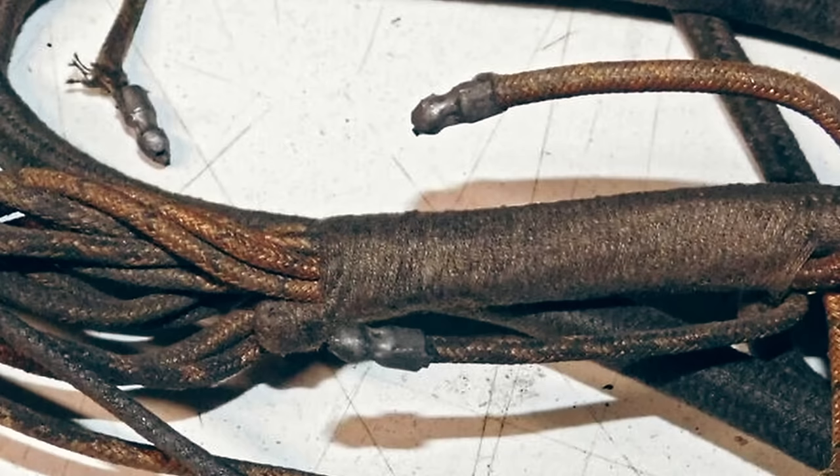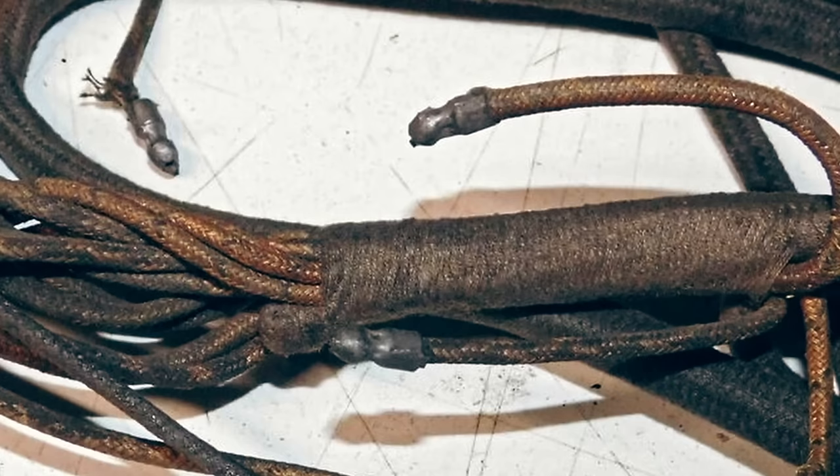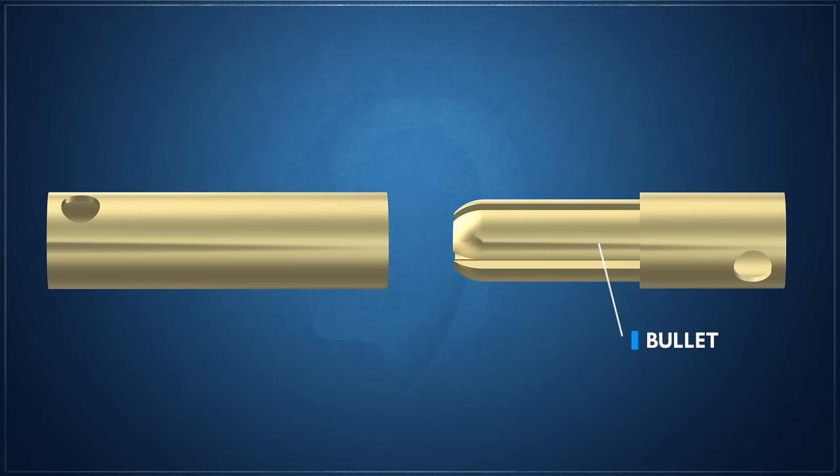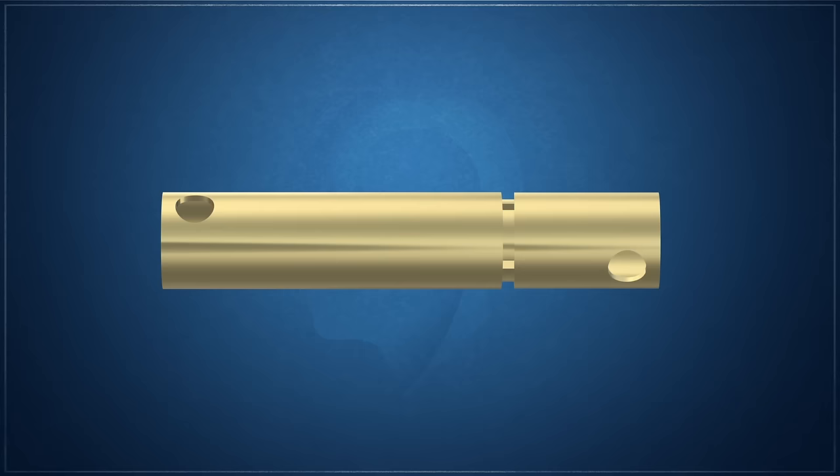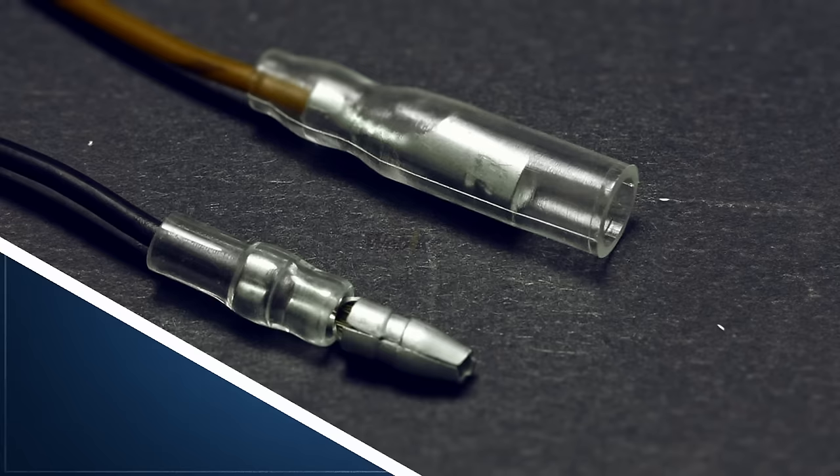In the 1930s, bullet terminals were one of the first fastener-less connector systems to appear on vehicles. Bullet terminals consist of a male component, the bullet, and a corresponding female component, the socket or sleeve, into which the bullet fits snugly. These connectors are usually made from soft metals such as brass or tin-plated brass, which are chosen for their good electrical conductivity and resistance to corrosion. The exterior of the connector often features an insulation sleeve made of vinyl or rubber to protect the connection.